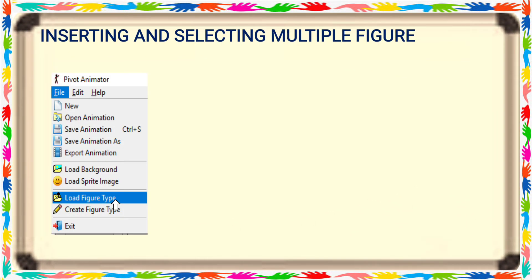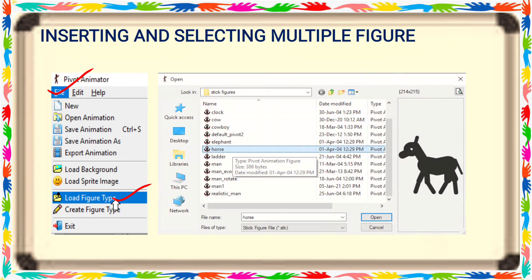This is the option for inserting and selecting multiple figures. For the load figure type options, just click — that means under the File tab, choose the load figure type option. If you want to select a single file, click the file and press the Open option.